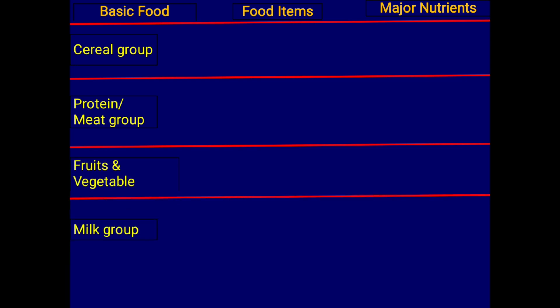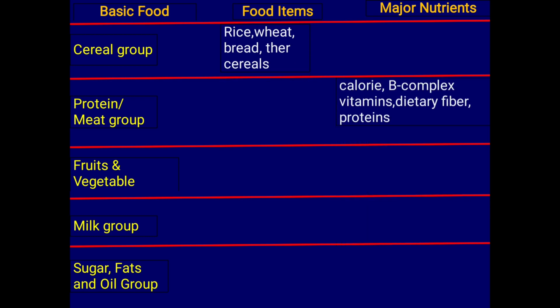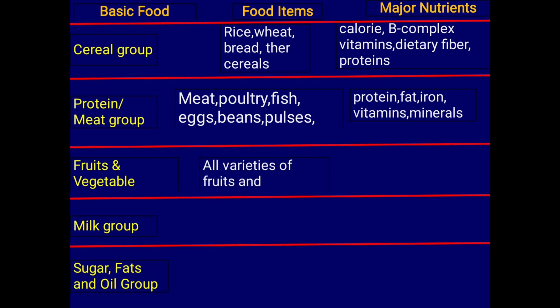Cereals — wheat, rice and all — mainly provide calories, along with B complex vitamins, dietary fiber, and some proteins. If you use whole grain, you also get dietary fiber and vitamins. Protein food group includes meat, fish, egg, beans, and pulses; pulses and eggs are rich in protein. From these we get protein along with fat, iron, vitamins, and minerals.